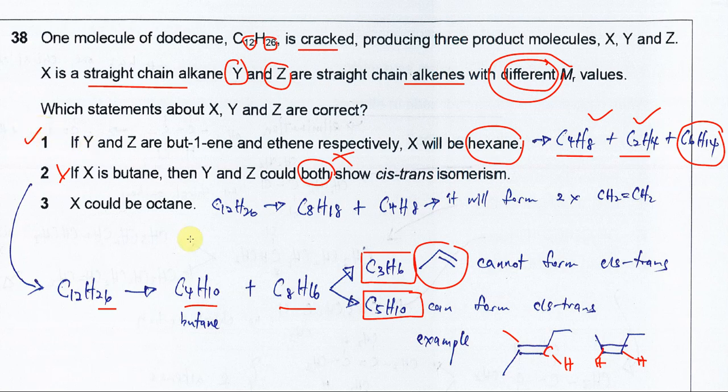The last statement: X could be octane. If it's octane, C12H26 minus C8H18 can only form the alkene with the same carbon and hydrogen, which is C4H8.